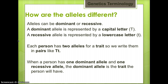How are the alleles different? Alleles can be dominant or recessive. We originally called the dominant gene the strong gene, and the recessive gene the weak gene. A dominant allele is represented by a capital letter, for example, capital T. A recessive allele is represented by a lowercase letter, for example, lowercase t. Each person has two alleles for a trait, so we write them in pairs like capital T, lowercase t. When a person has one dominant allele and one recessive allele, the dominant allele is the trait the person will have — the strong gene beats the weak gene.